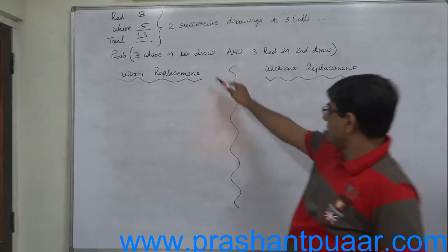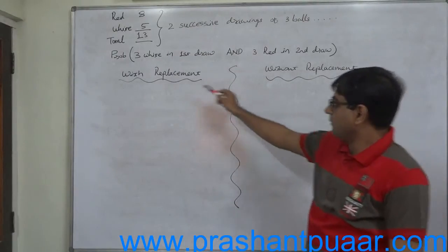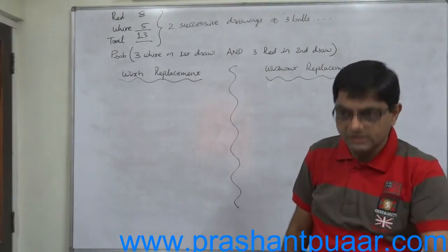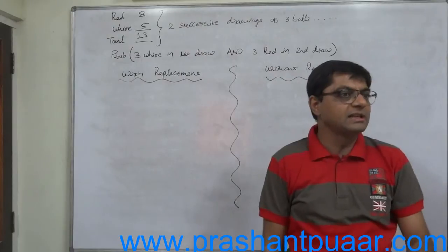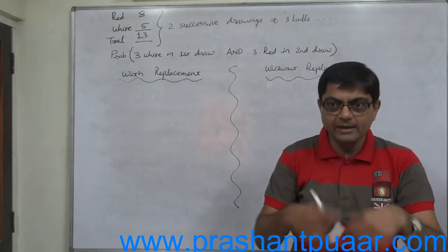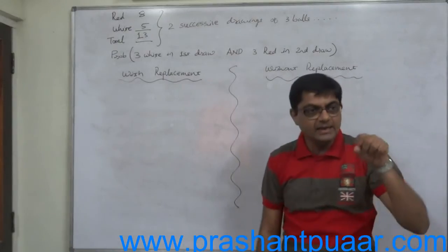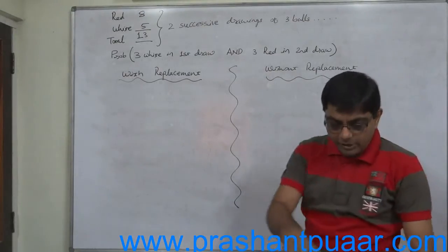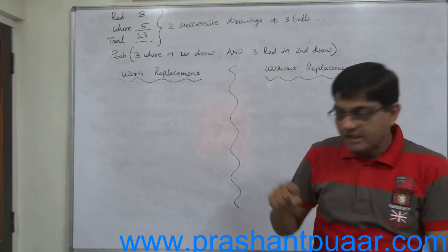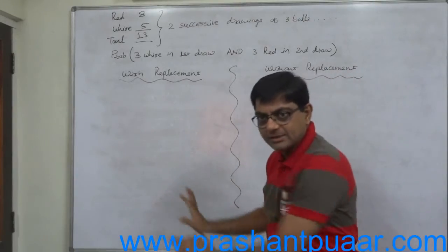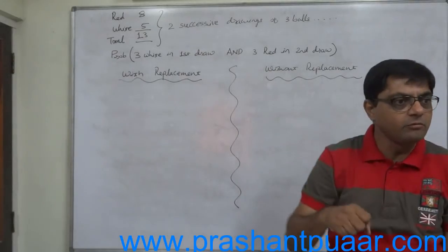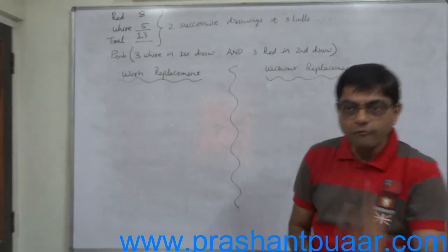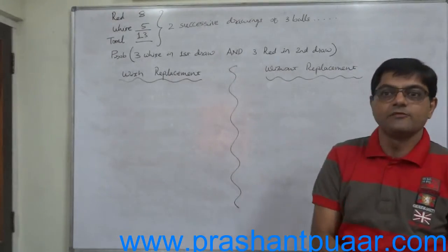The answer can be different under two situations: with replacement and without replacement. With replacement means the 3 bowls drawn in the first draw are replaced before the second draw, so the total number of bowls remains the same. Without replacement means we draw 3 bowls in the first draw, place them aside, and then draw again — so the total number of bowls at the time of second draw will be 3 less.